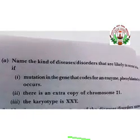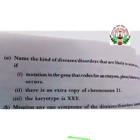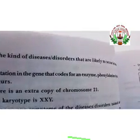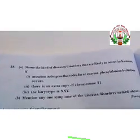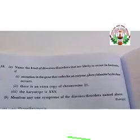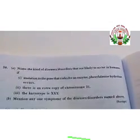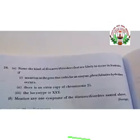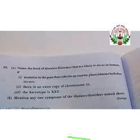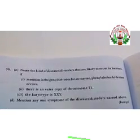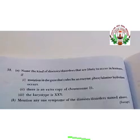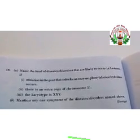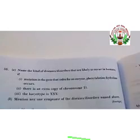Name the disease or disorder that is likely to occur in humans if mutations in the gene that codes for the enzyme phenylalanine hydroxylase occur. Second, there is an extra copy of chromosome 21. Third, the karyotype is XXY. Then, mention any one symptom of the disease or disorders named above.